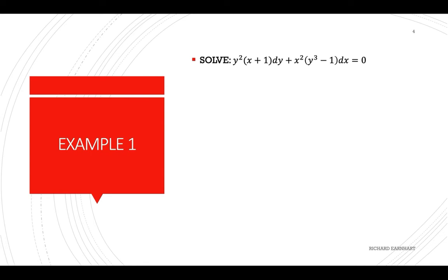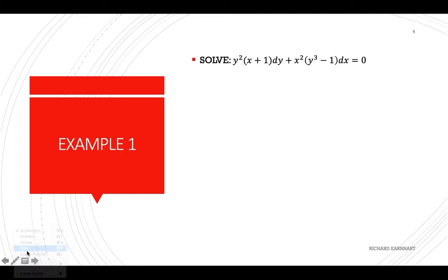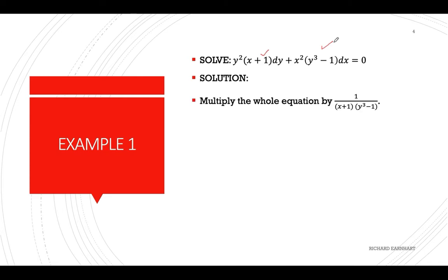Let's solve the given differential equation. The equation is variable-separable because we can multiply by 1 over (x plus 1) to eliminate (x plus 1) from the dx term, and we eliminate (y cubed minus 1) by multiplying by 1 over (y cubed minus 1). So the multiplier will be 1 over (x plus 1) and 1 over (y cubed minus 1).